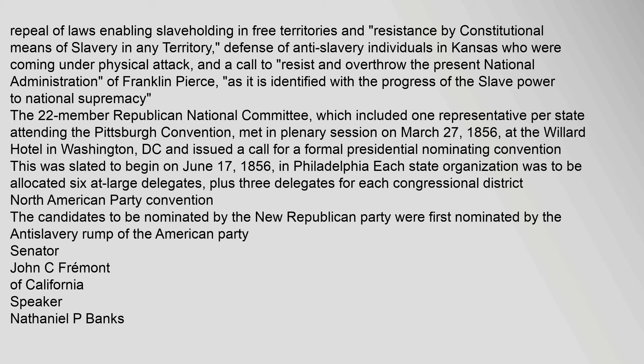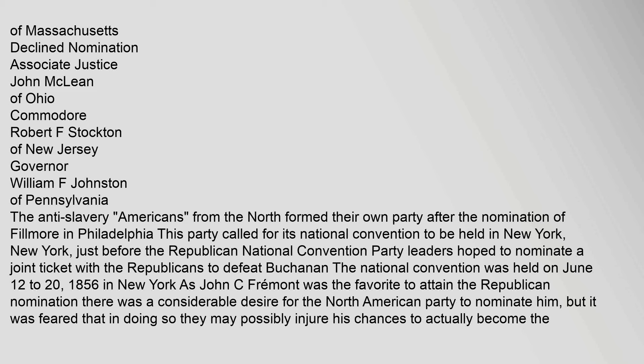The candidates to be nominated by the new Republican Party were first nominated by the anti-slavery rump of the American Party: Senator John C. Fremont of California, Speaker Nathaniel P. Banks of Massachusetts (declined nomination), Associate Justice John McLean of Ohio, Commodore Robert F. Stockton of New Jersey, and Governor William F. Johnston of Pennsylvania. The anti-slavery faction from the North formed their own party after the nomination of Fillmore in Philadelphia. This party called for its national convention to be held in New York, New York, just before the Republican National Convention.